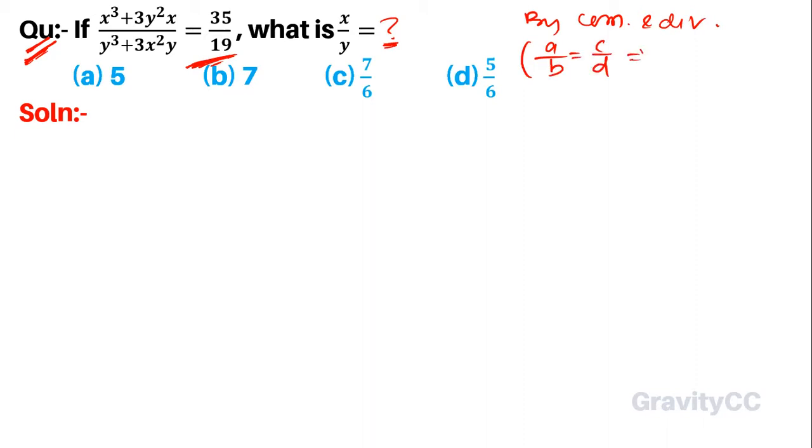The property is: a plus b over a minus b equals c plus d over c minus d. If we use this property, then it will be x³ + 3y²x plus y³ + 3x²y.